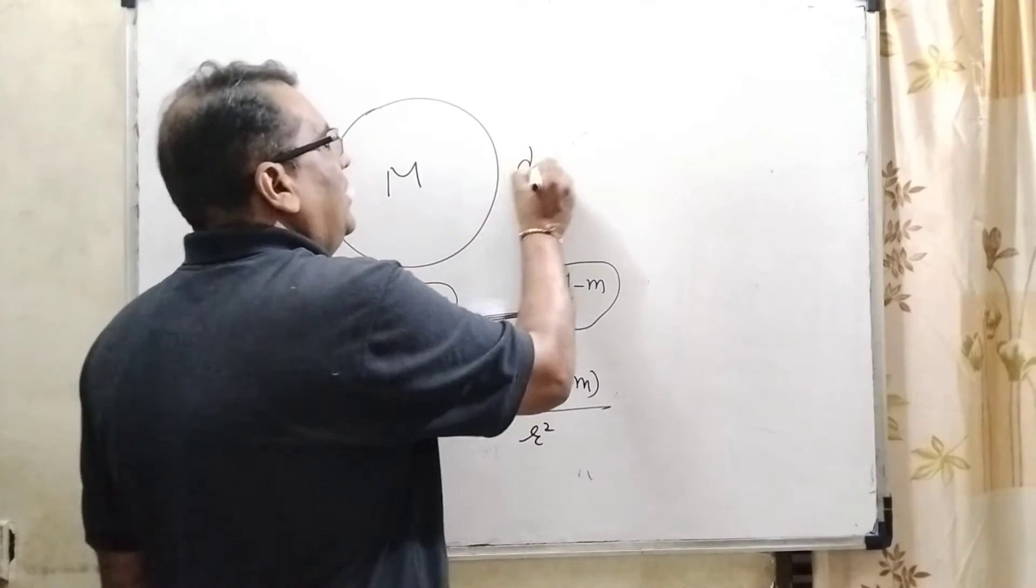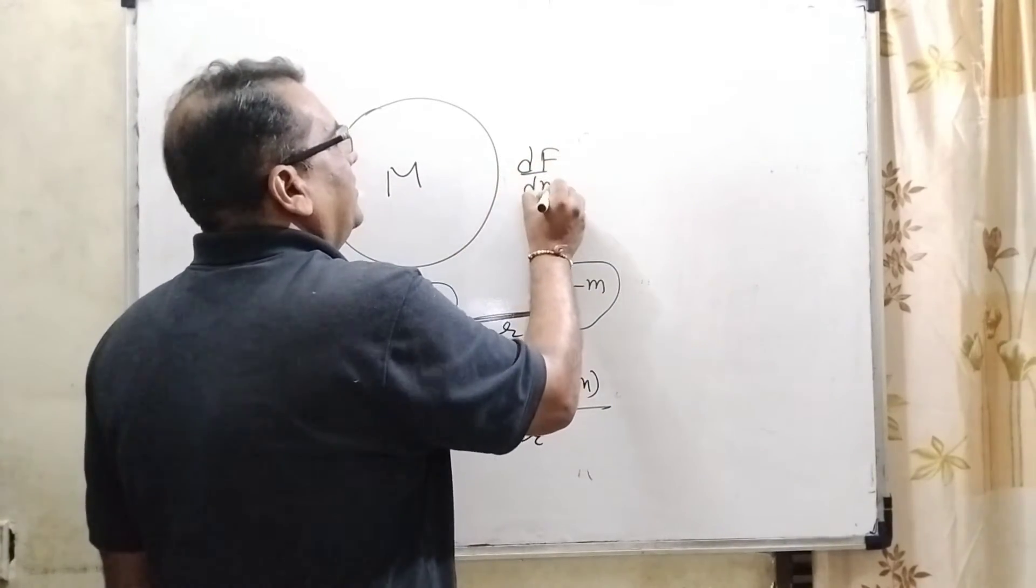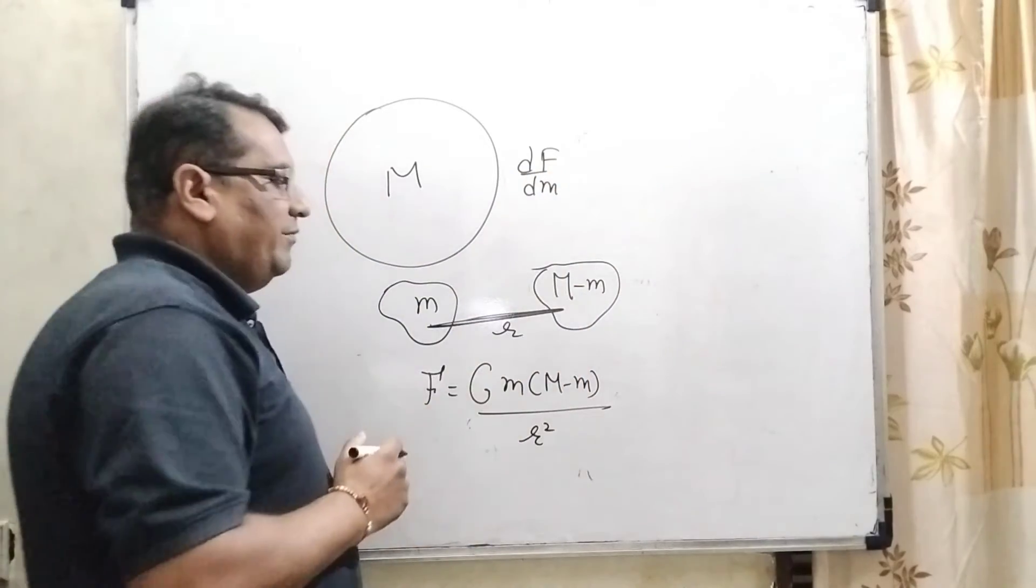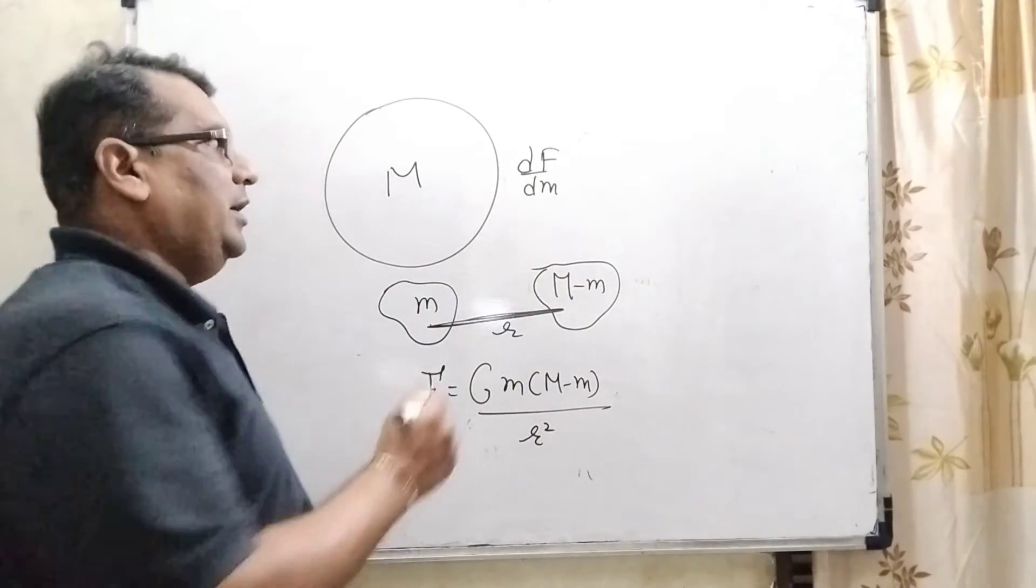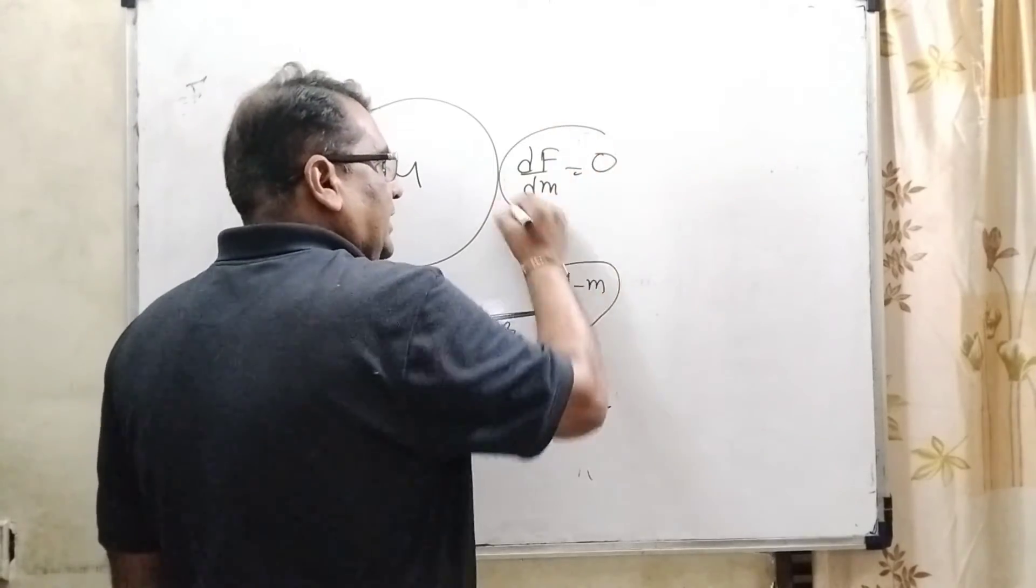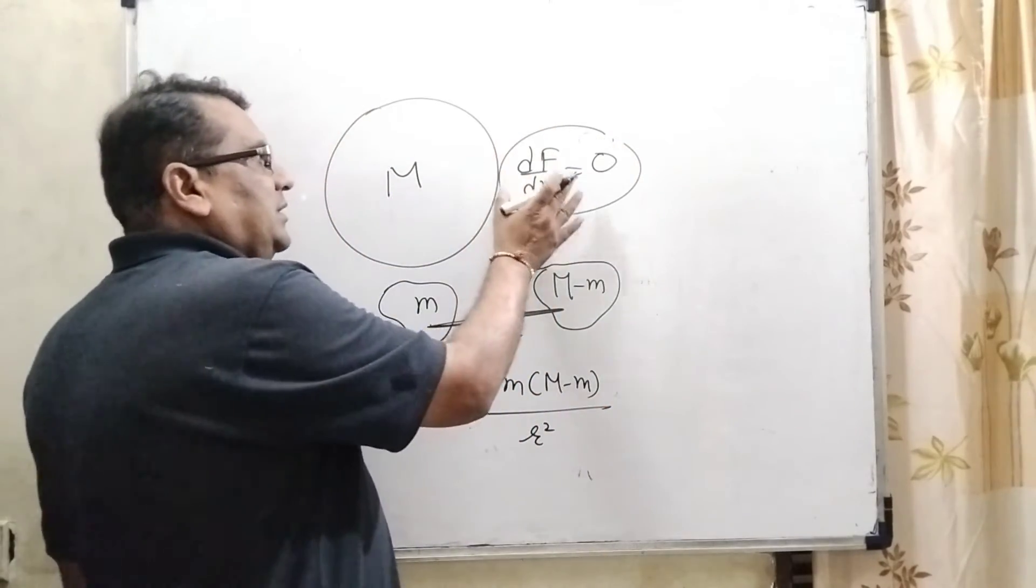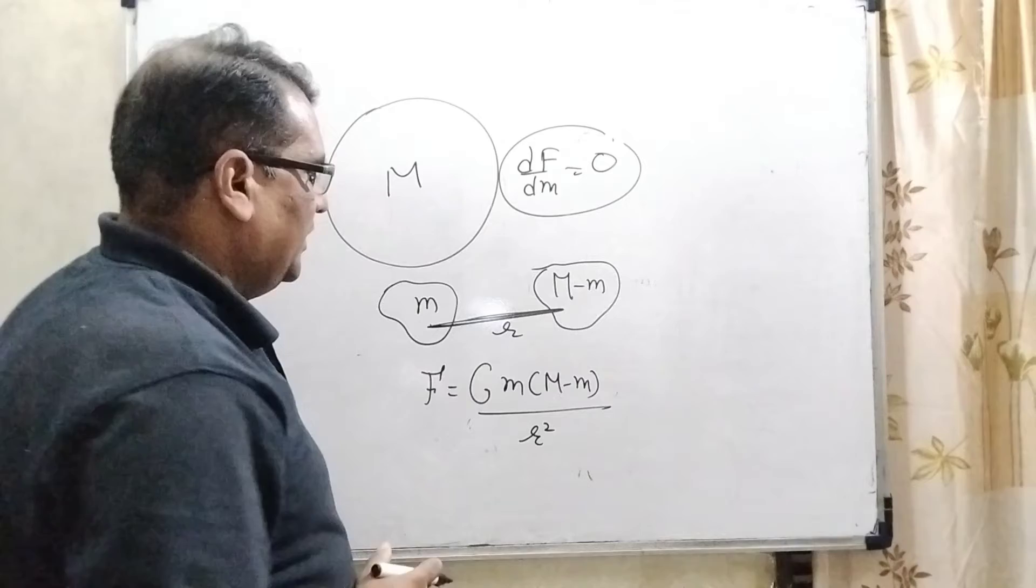So therefore we have applied the mathematical concept maxima and minima. So what says the maxima? dF upon dm, whenever we have to differentiate with respect of small m then equal to zero, then we will get the condition. So here, that is the key point of this question.